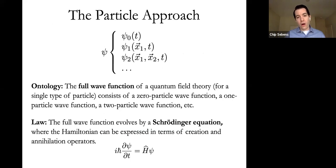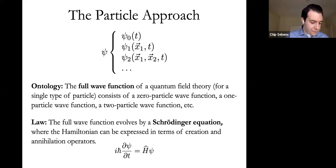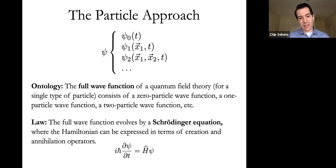On the particle approach, the quantum state is represented by a wave function spanning all possible arrangements: a complex number assigned to zero particles, to single-particle locations, to two-particle arrangements, and so on—the full Fock-space wave function. This evolves by a Schrödinger equation with a Hamiltonian expressed in terms of creation and annihilation operators, allowing particle number to change. Starting with a two-particle wave function, it might evolve into a four-particle wave function, so creation and annihilation are possible in this picture.